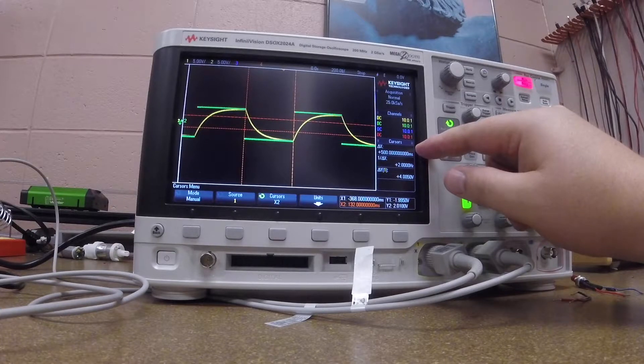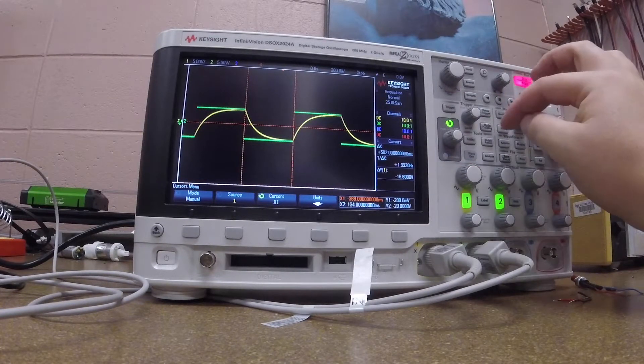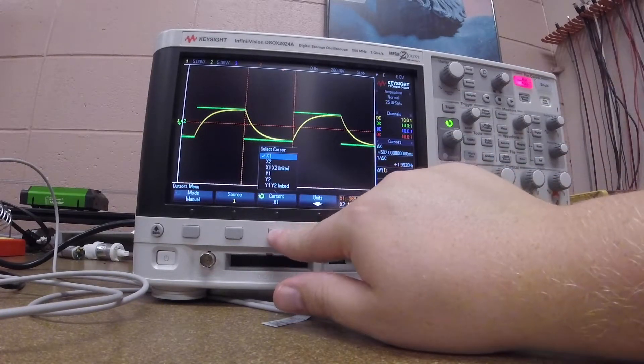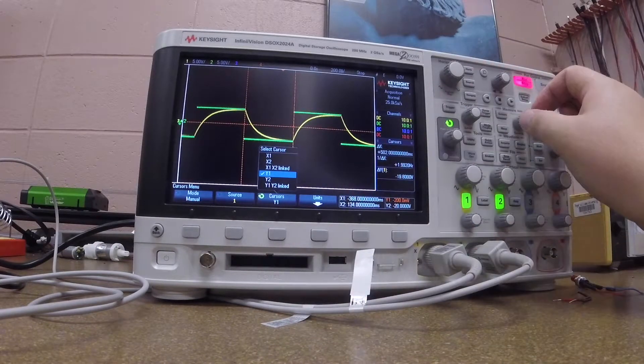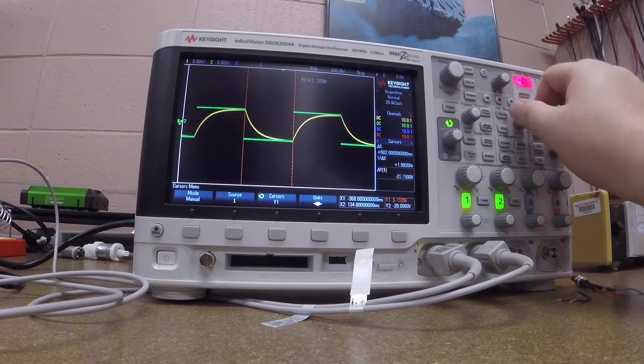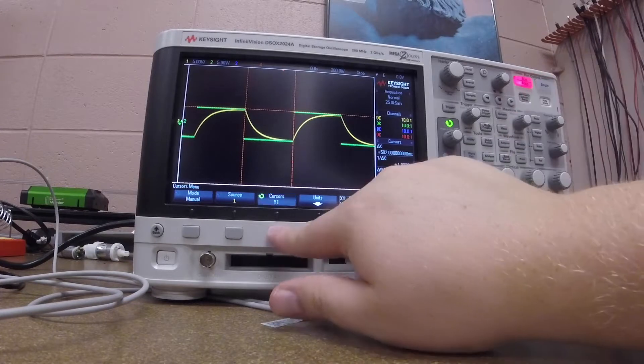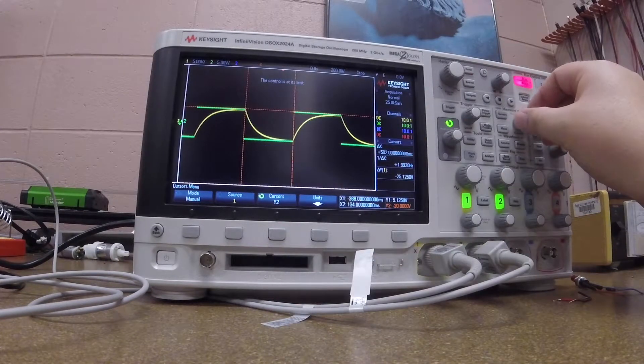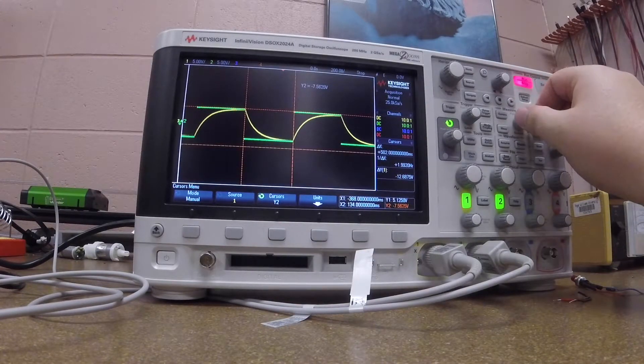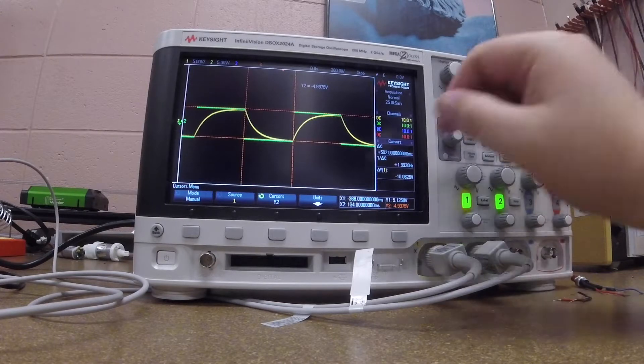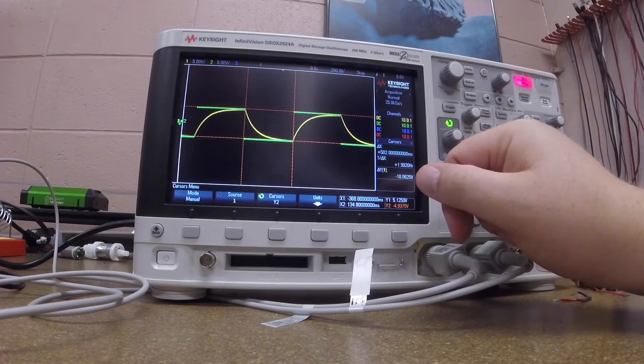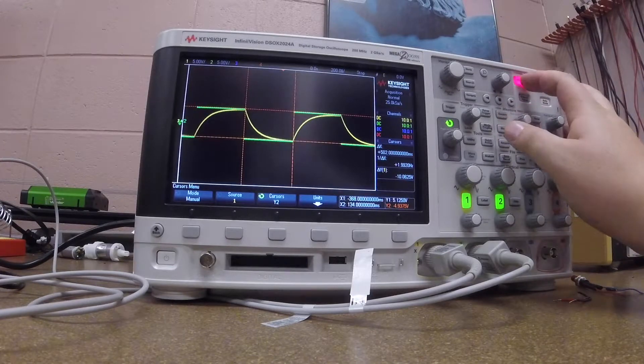It gives me the distance in between values. I could do the same type of thing using the Y cursors to measure vertical distance. Y1 I could set to the top of this waveform. Similarly, Y2 I could set to the bottom of the waveform. I can measure a delta Y, and you see that it's about 10 volts.